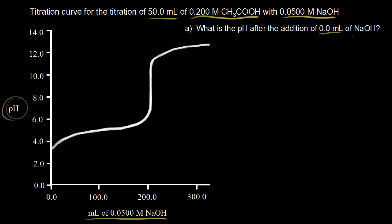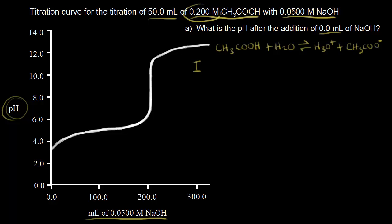We only have to think about a weak acid equilibrium problem here. Our weak acid is acetic acid in water. Acetic acid donates a proton to H₂O, so H₂O turns into H₃O⁺, and if you take away a proton from acetic acid you're left with CH₃COO⁻, the acetate anion. Our initial concentration of acetic acid is 0.200 molar, and we're assuming no products are present yet — as covered in the video on weak acid equilibrium.